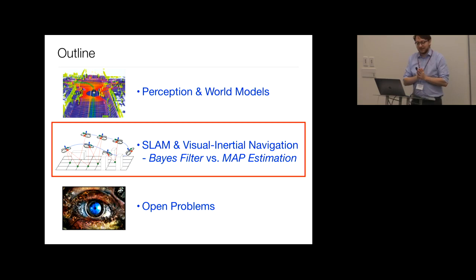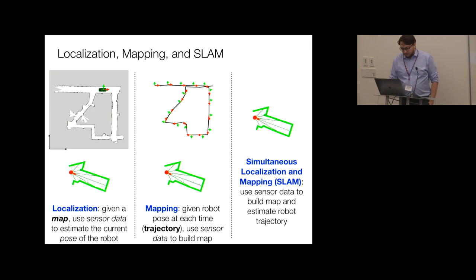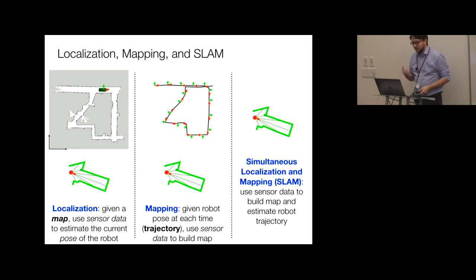Any questions so far? That was all basic terminology. I want to now formalize the three main variants of the spatial perception problem: localization, mapping, and SLAM.